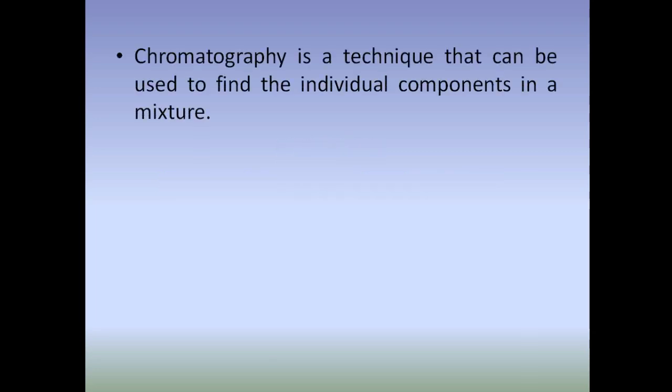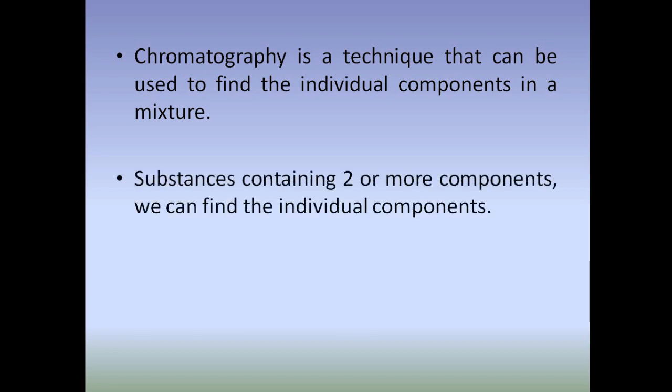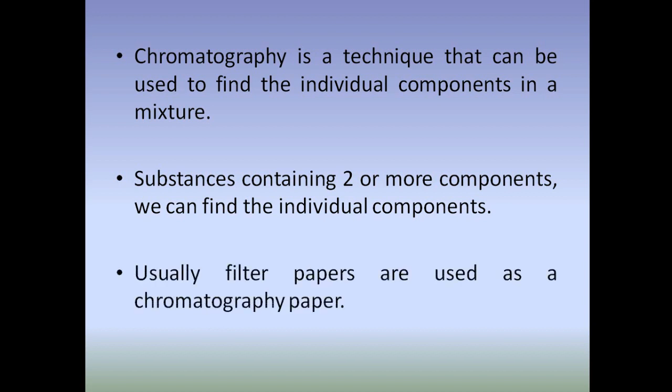In this chapter we can understand how to assess the purity of substances using paper chromatography. Chromatography is a technique that can be used to find the individual components in a mixture. If a substance contains two or more components, we can find all individual components using paper chromatography.